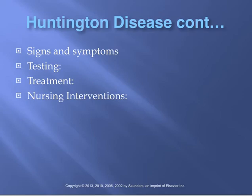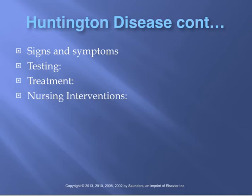Diagnostics for Huntington's include genetic testing, CT or MRI which may show cerebral atrophy, and a PET scan which may show decreased glucose uptake in the brain. Unfortunately, there is no cure — it is a progressive disease. Treatment focuses on managing the dyskinesia and behavior using medications like phenothiazine or Haldol. Key nursing interventions include protecting against suicide, helping with activities of daily living, and providing safety and comfort.